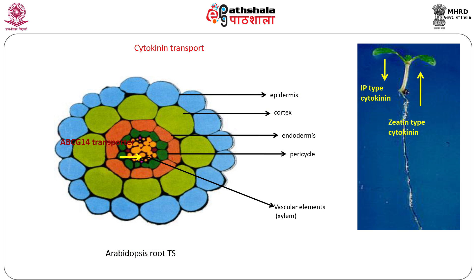Cytokinins may be active at their sites of synthesis or may be transported over long distances as glucosides. Zeatin-type cytokinins are known to be transported through the xylem from roots to shoots. The transporters for cytokinins present in the roots belong to the ATP-binding cassette, called the ABC family of transporters. These transporters move the cytokinins into the xylem from the neighboring cells of the stele. Mutants defective in these transporters show poor shoot development.